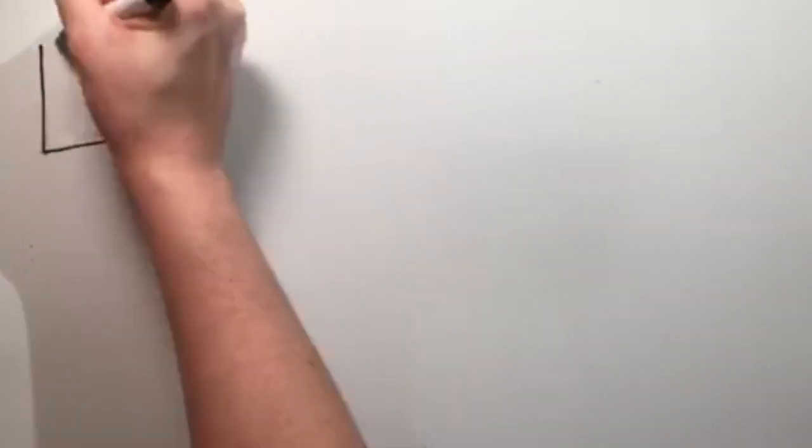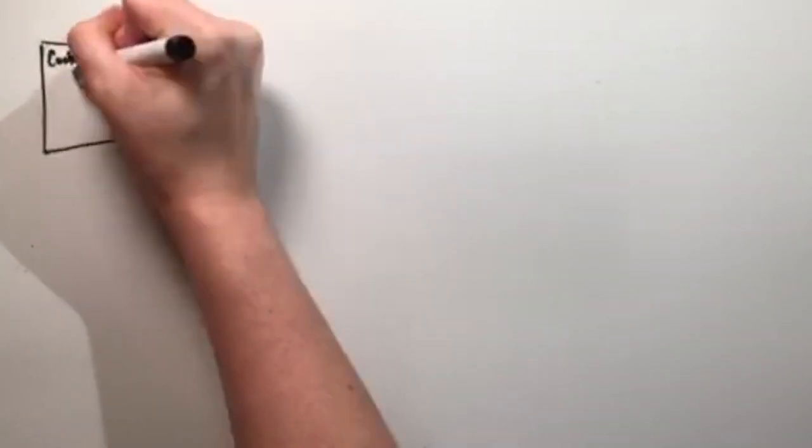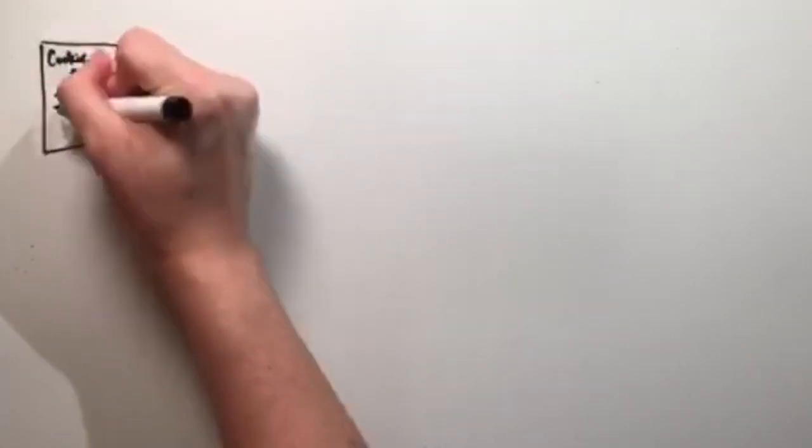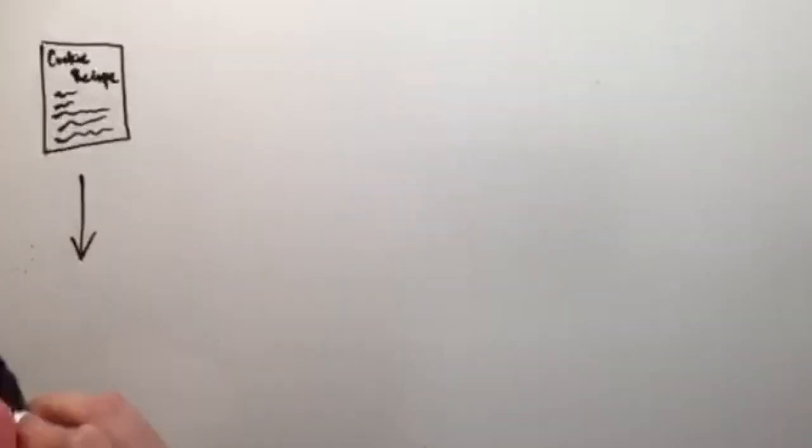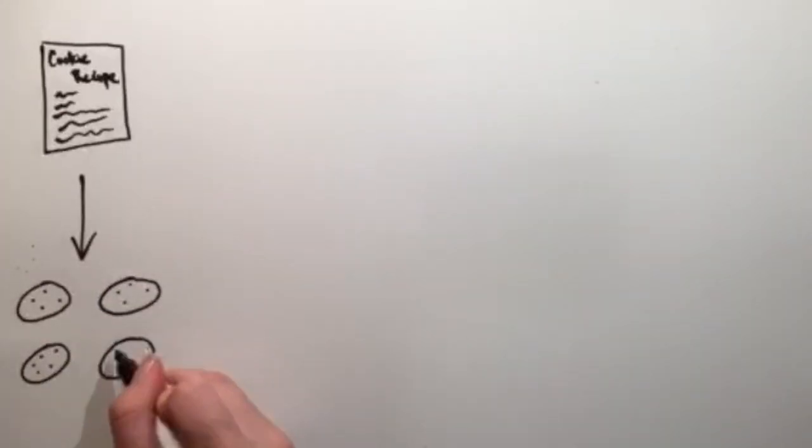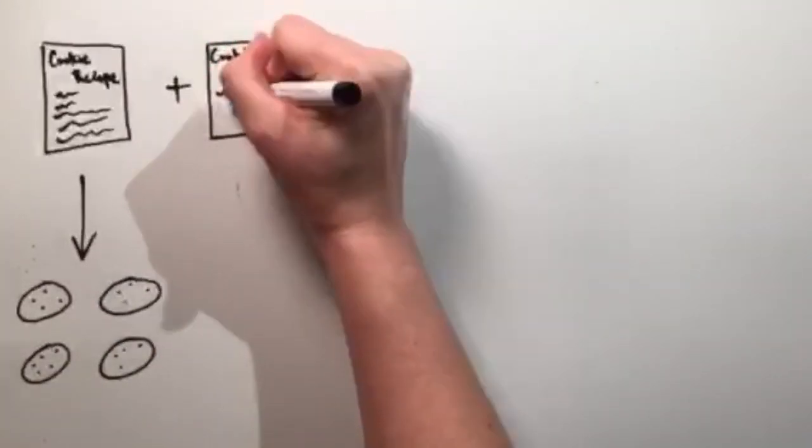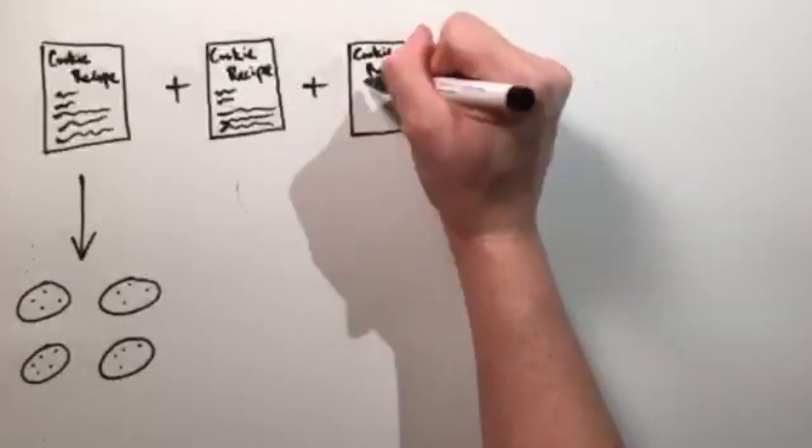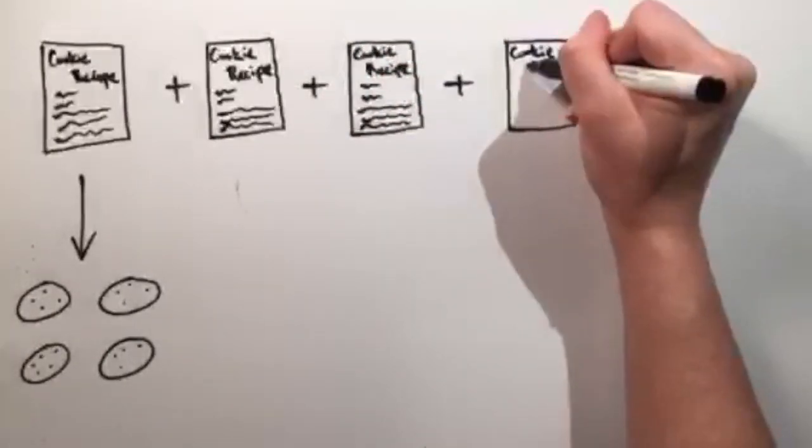To explain this in another way, imagine that a gene sequence is like a cookie recipe. Each recipe can only make a certain number of cookies. Now, if you duplicate that recipe, you can make even more cookies in the same amount of time.